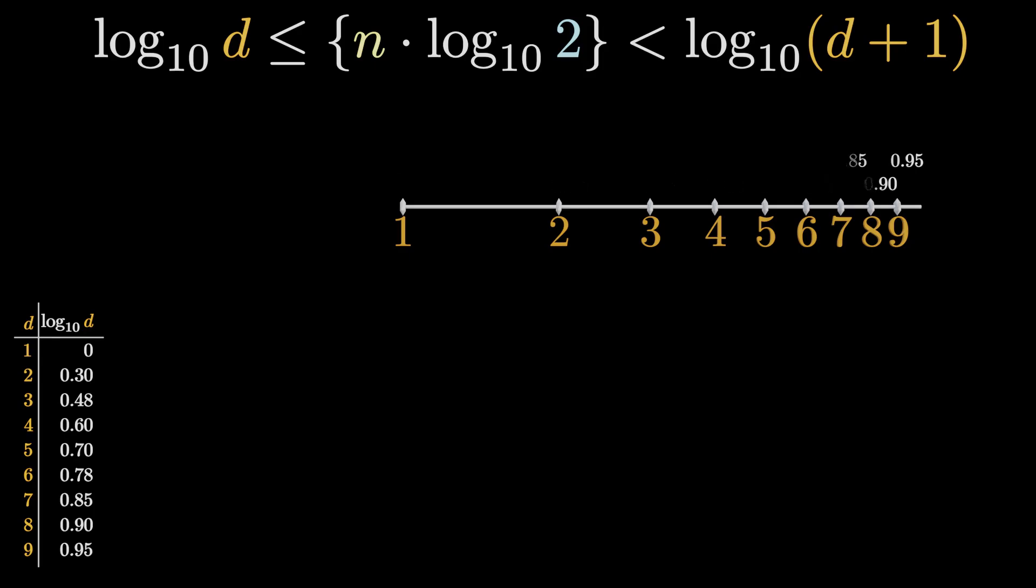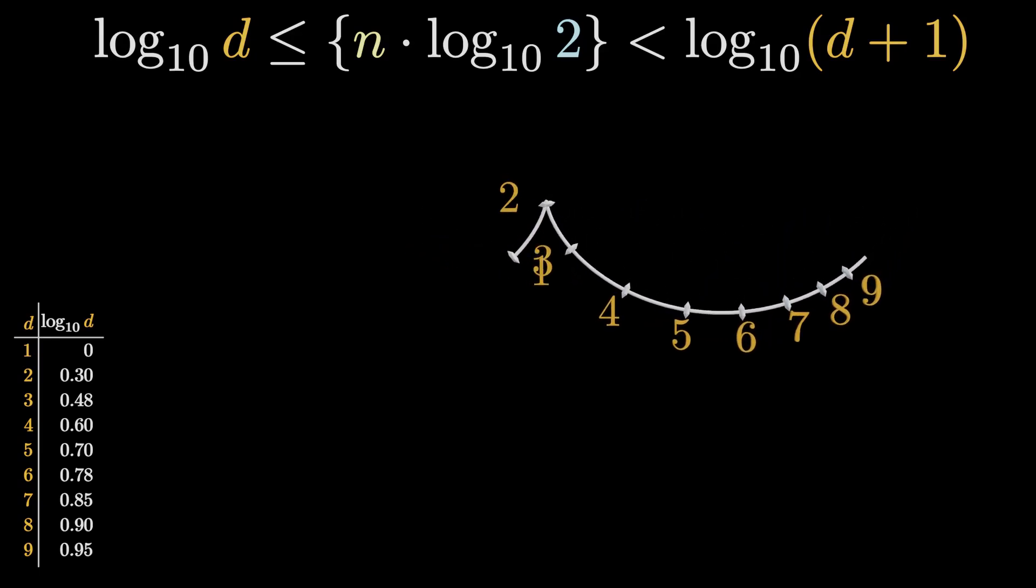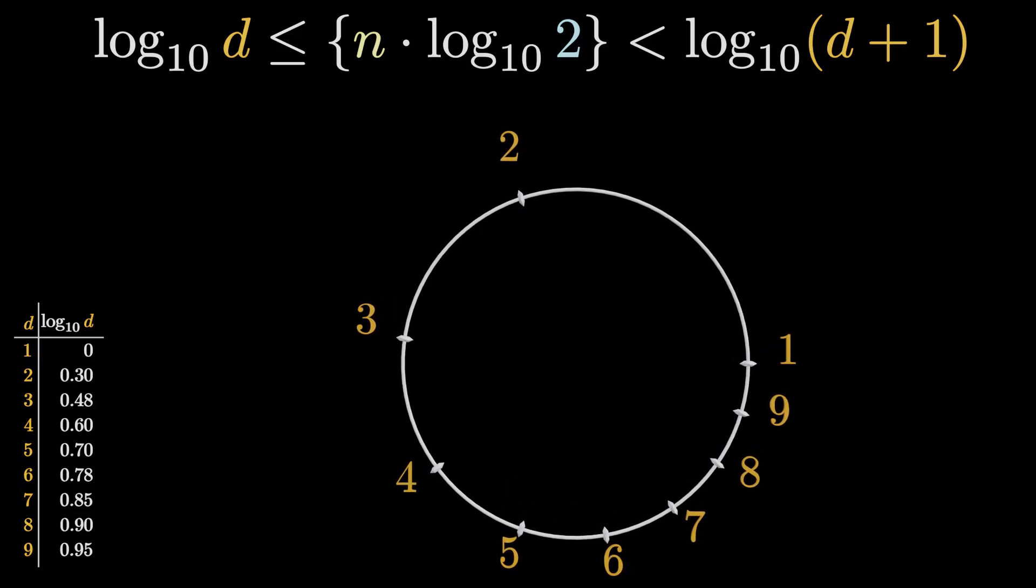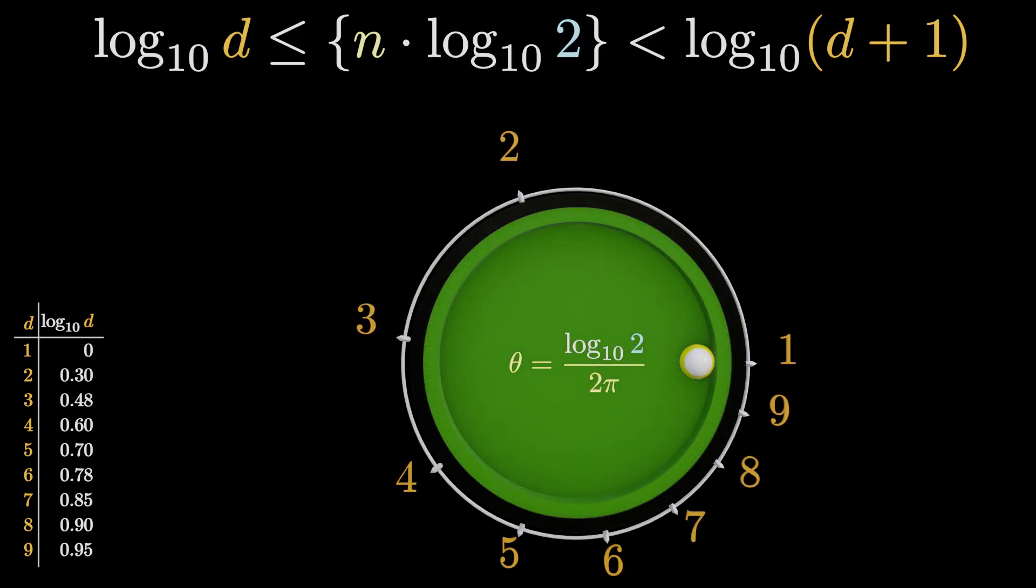Although I've heard it a million times that the open unit interval can be transformed into a circle, I would have never come up with this final twist. We just wrap this interval around our billiard table. Then we push the ball at an angle theta equal to log 2 over 2 pi. It's amazing to see that each multiplication with 2 just corresponds to a reflection of the billiard ball.